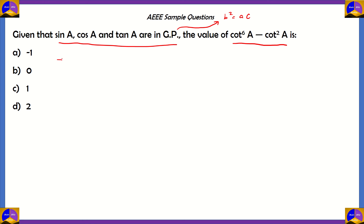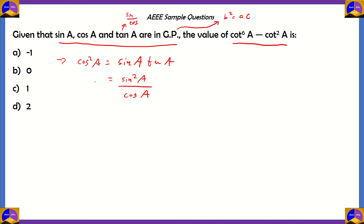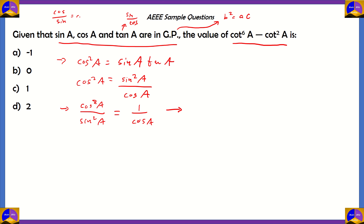Applying b² = ac here, we get cos²A equals sinA times tanA. We know that tanA equals sinA/cosA, so sinA times tanA gives us sin²A over cosA. Taking the squared terms to the left-hand side, sin moves to the left, so cos²A over sin²A on the left equals 1/cosA on the right. Since cos/sin gives us cot, and 1/cos is sec, we get cot²A equals secA.